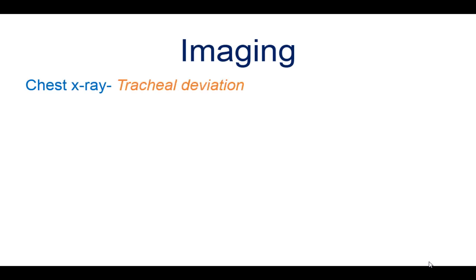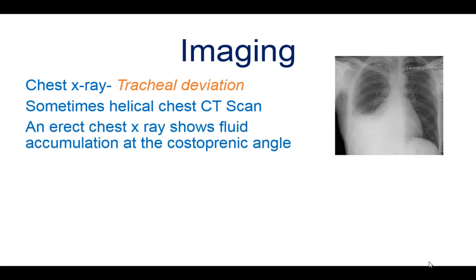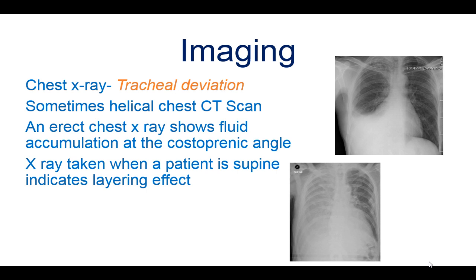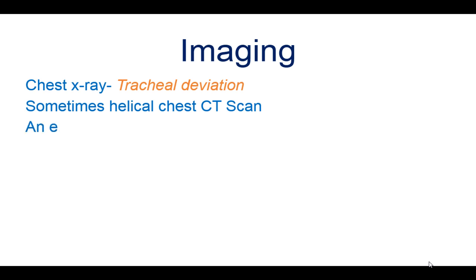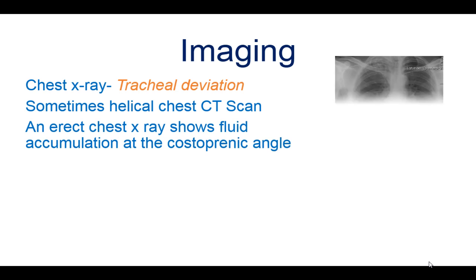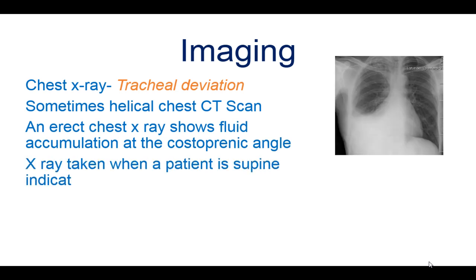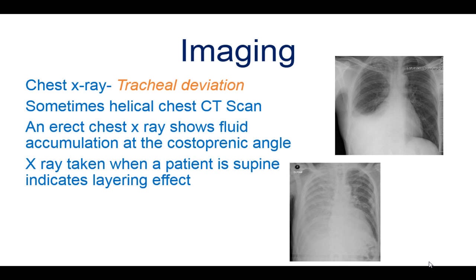On the imaging side, a chest X-ray will indicate tracheal deviation, and a helical CT scan may also be used. On a chest X-ray, it will indicate fluid accumulation at the costophrenic angles of the affected side. When taken with the patient supine, it will indicate a layering effect, as seen in this image.